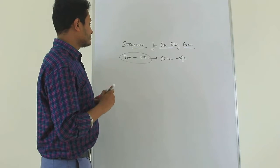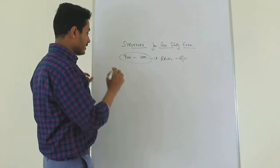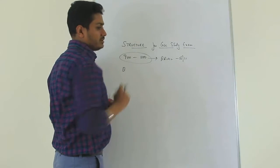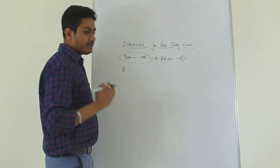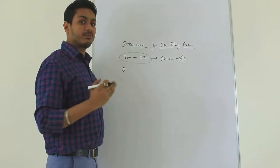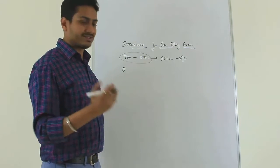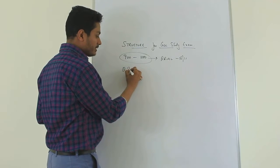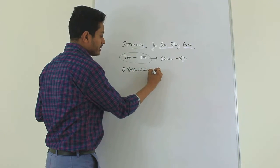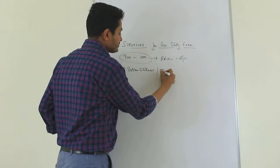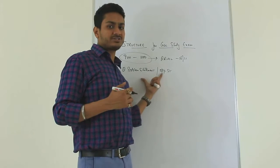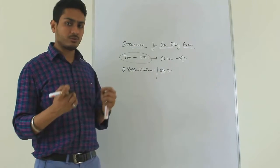When we look at the structure for the case study exam, you don't have to explicitly write the headings I'm giving you. I am just giving you a structure to keep in mind as you start writing. The first element is you need to decipher the problem statement. Sometimes it will be a problem statement and sometimes it might be an opportunity statement. So first, decipher, understand, and interpret what is the problem statement or the opportunity statement.